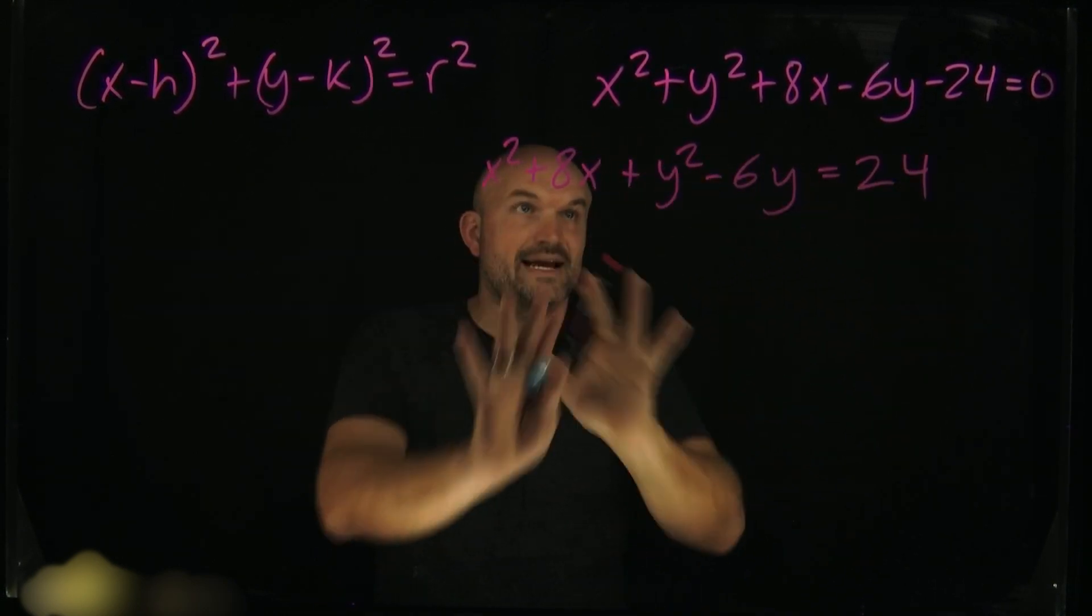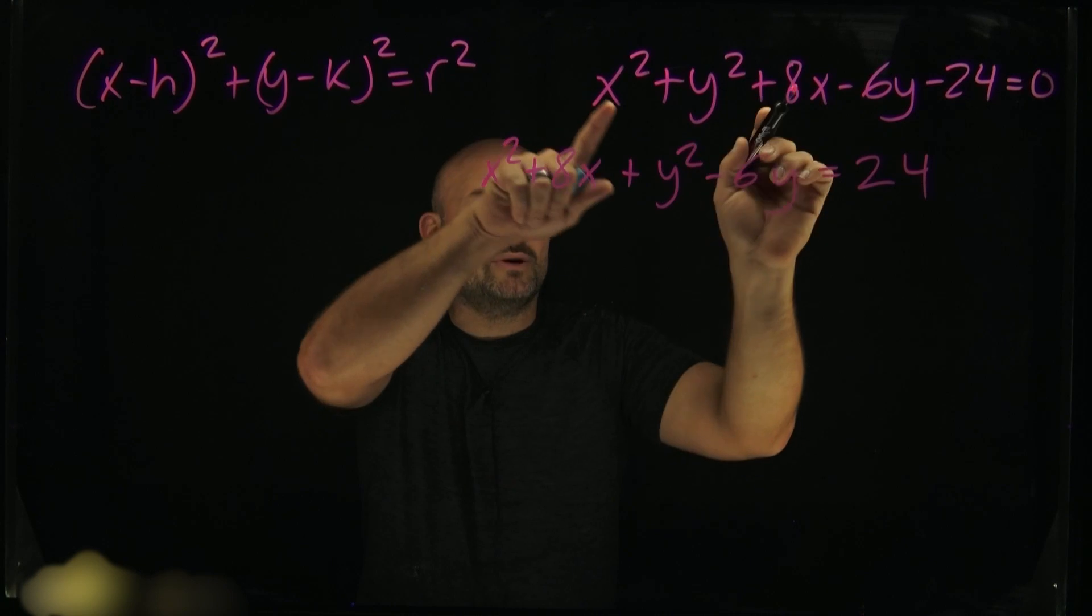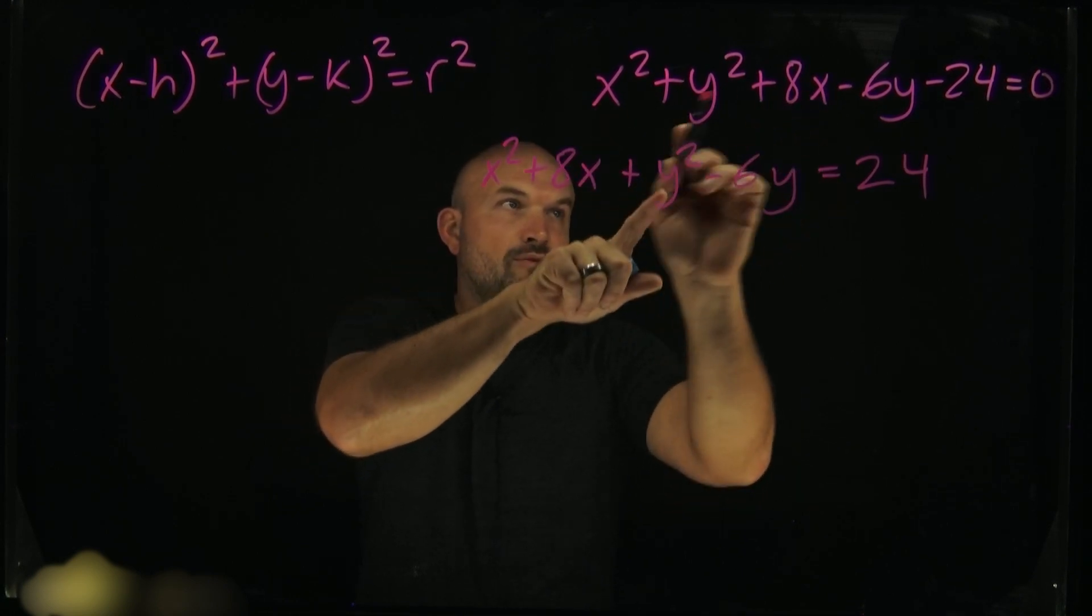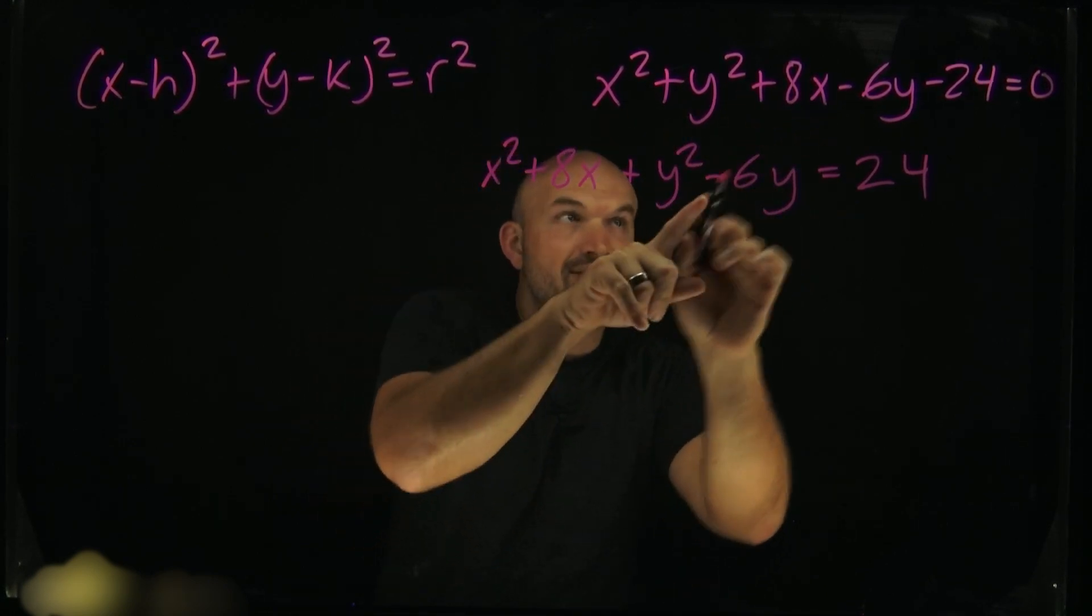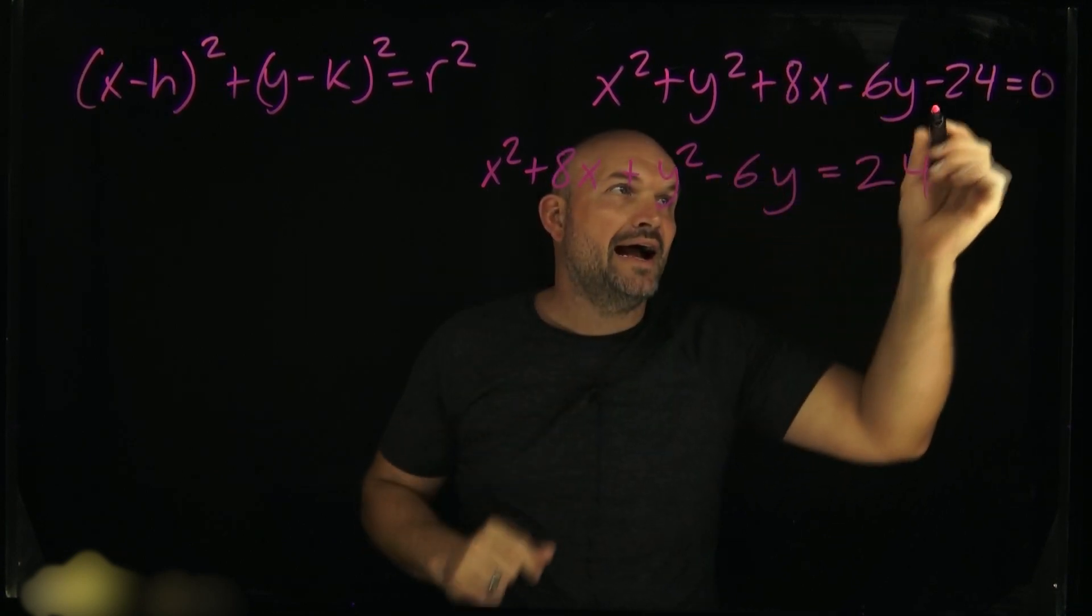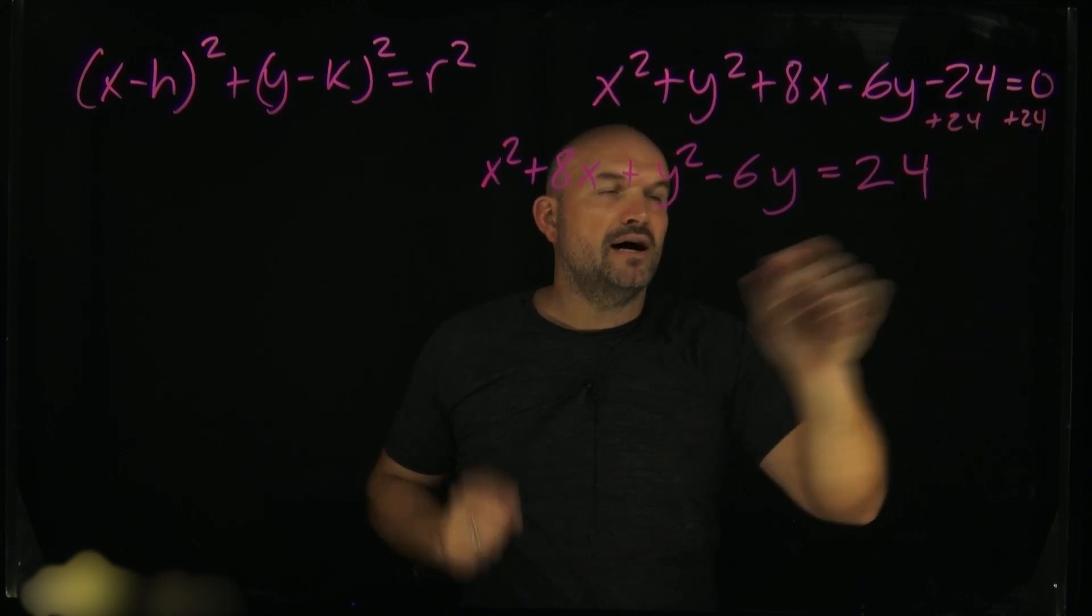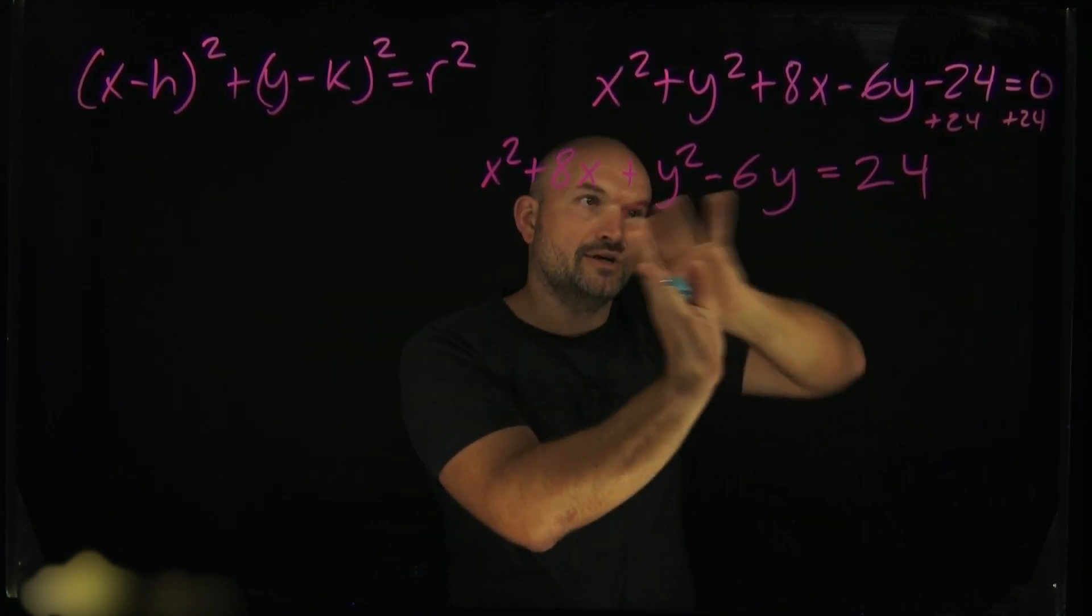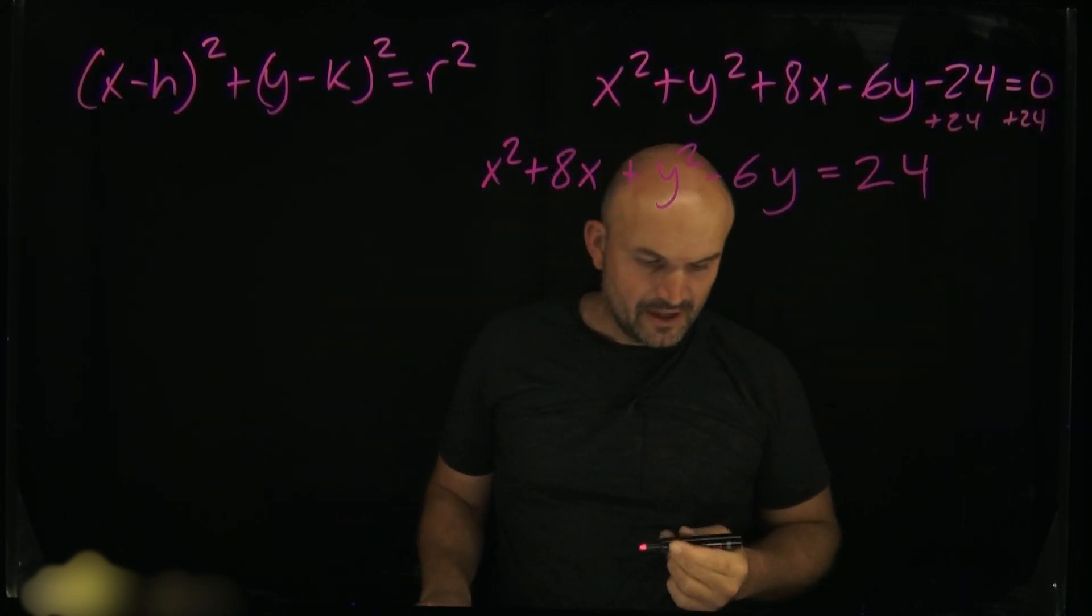What you can see here is all I did was I grouped the x squared plus the 8x. I took the y squared, and I made the mistake, as you noticed that I was adding, but it's not a plus 6y, it's a minus 6y. Then what I did is I just added the 24 to both sides, because we want all the constants here to be over here on the right-hand side.